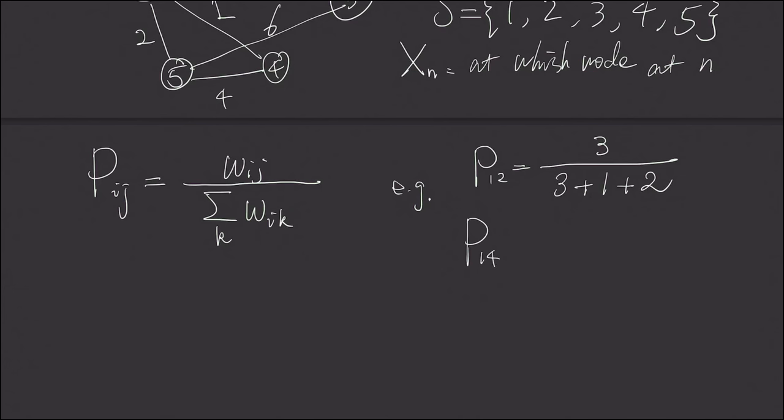Because we totally have 3 edges coming out from node number 1. This has strength 3, this has strength 1, and this has strength 2. And then, P14 is similarly, it's just 1 divided by 3 plus 1 plus 2. And P15 is 2 divided by 3 plus 1 plus 2.